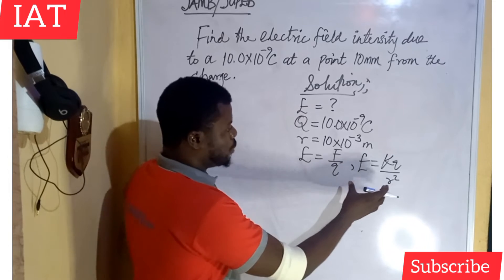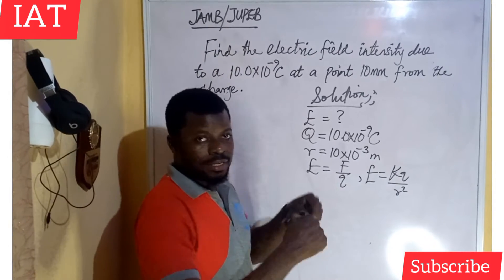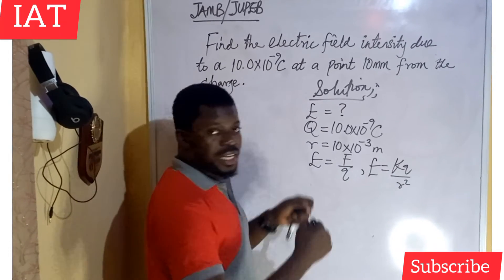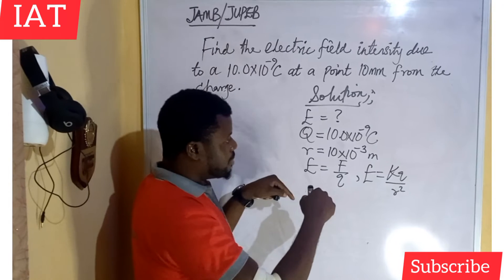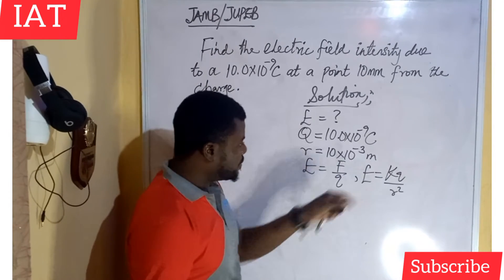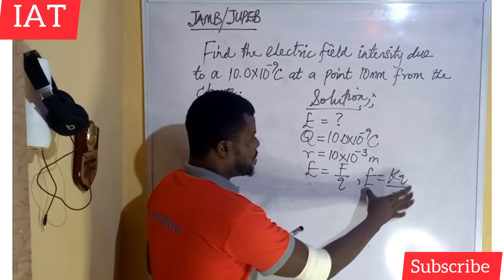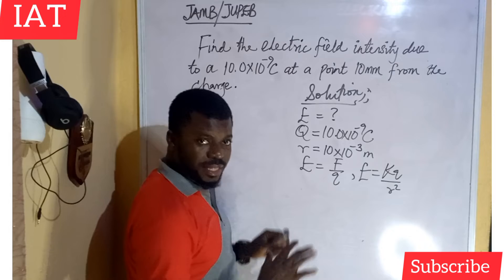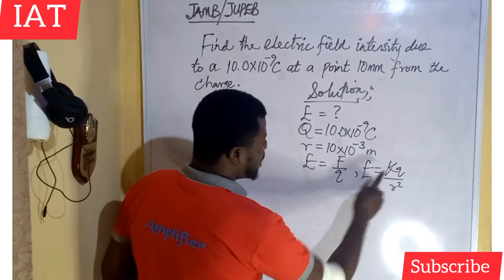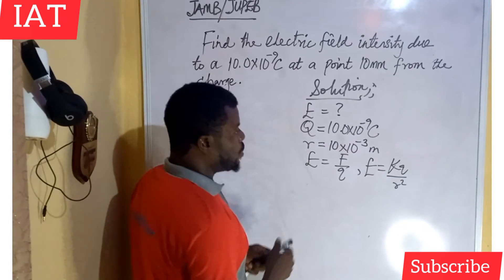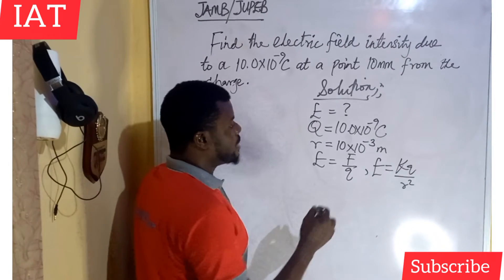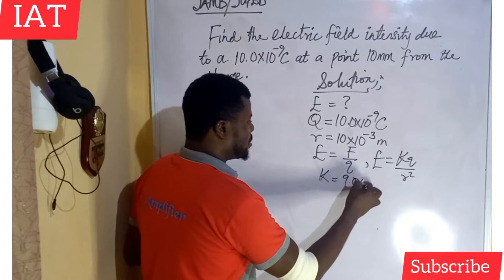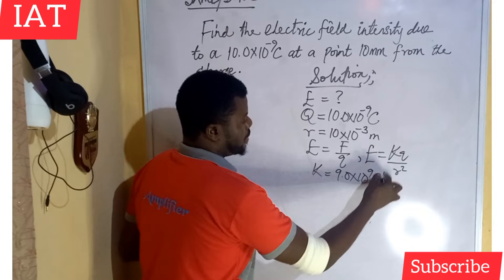If you don't understand how we got this expression, I will drop a link in the description to that video where I treat these expressions. The constant K has a value of 9.0 times 10 to the power of 9 Newton metres squared per coulomb squared. I also explained how this value comes to be in that video.